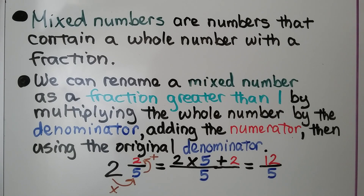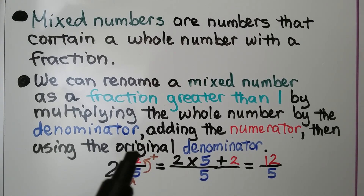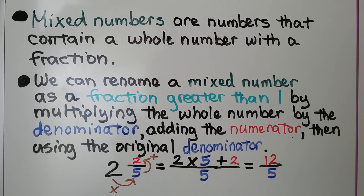Mixed numbers are numbers that contain a whole number with a fraction. We can rename a mixed number as a fraction greater than 1 by multiplying the whole number by the denominator, adding the numerator, then using the original denominator. So 2 and 5 fifths: 2 times the denominator 5 gives us 10, we add the numerator 2 to get 12, and write it over the original denominator — we have 12 fifths.